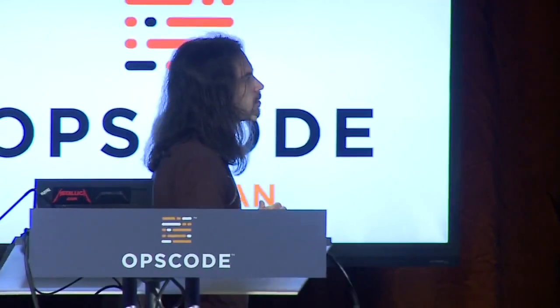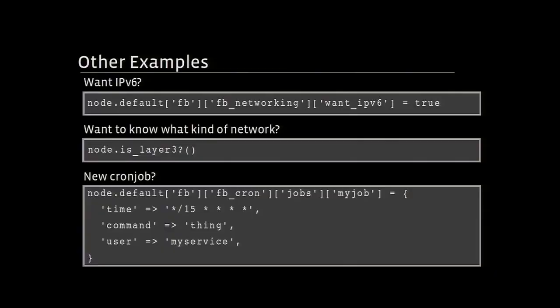We have other examples. We have a Boolean for setting up IPv6: if you say true, we grab an IP address from our internal systems, load all the modules, and so on. If you turn it off, we remove all the modules and blacklist them. We have methods for determining whether you're in one of our Layer 3 or Layer 2 clusters, and we have a hash of cron jobs.